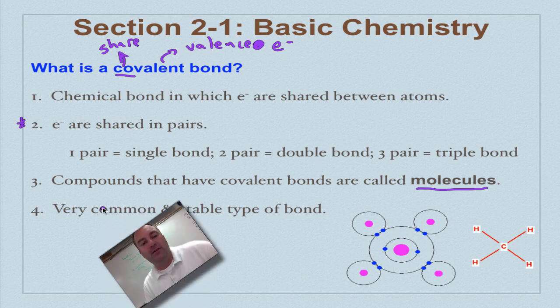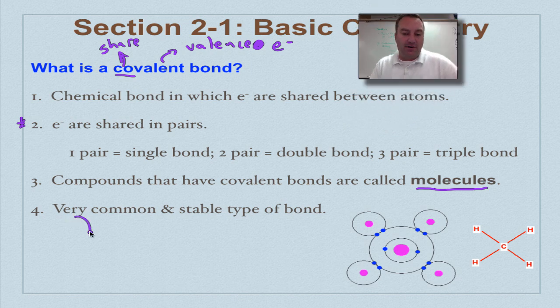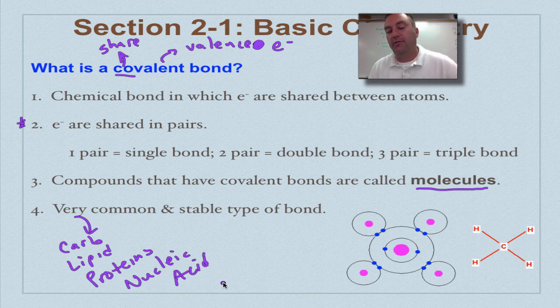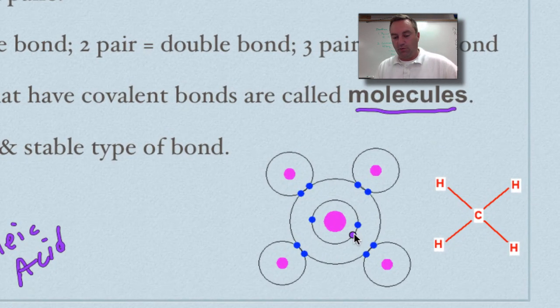These are very common in living things. So things that are going to be made up of covalent bonds, think of carbohydrates, lipids, proteins, and nucleic acids like DNA and RNA. Those are all made up of covalent bonds. So covalent bonds or molecules are very common in your body.